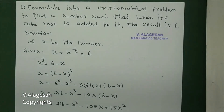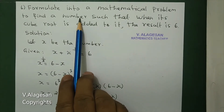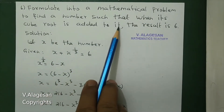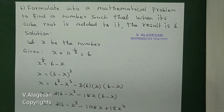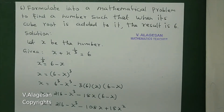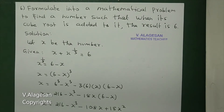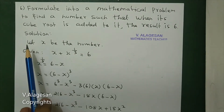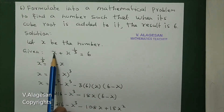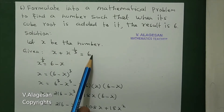We need to find one number and formulate the mathematical problem. The number is such that when its cube root is added to it, the result is six. So we can formulate: let x be the number, then x plus x to the power one-third equals six.